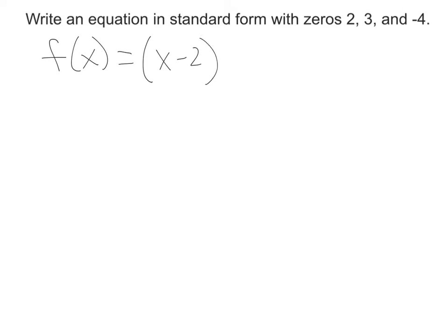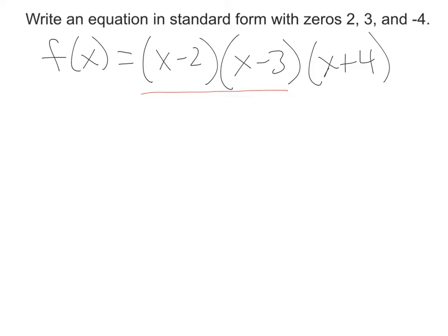If it crosses at positive 3, it's x minus 3. And if it crosses at negative 4, it's x plus 4. This is considered factored form. We want to write it in standard form, so we're going to take the first couple of factors and FOIL them together.